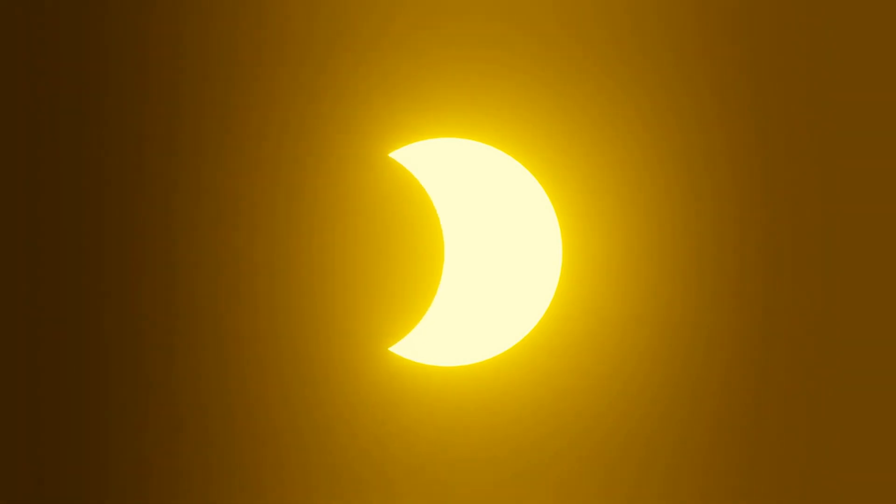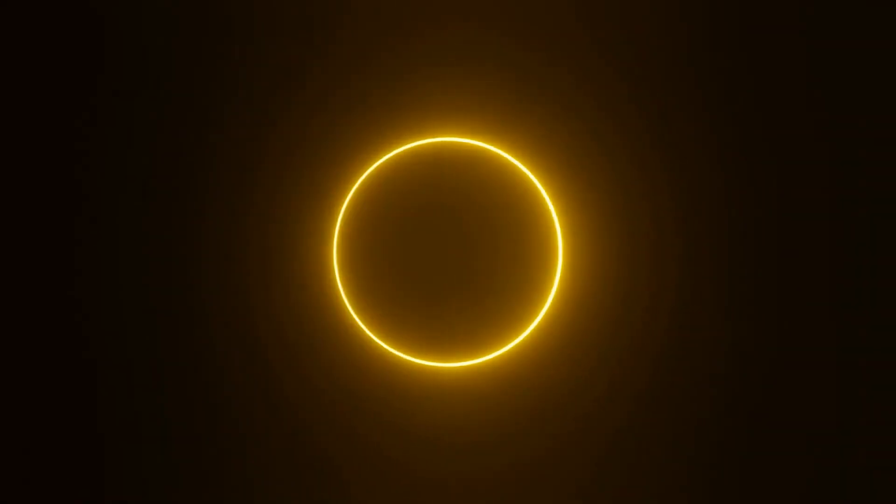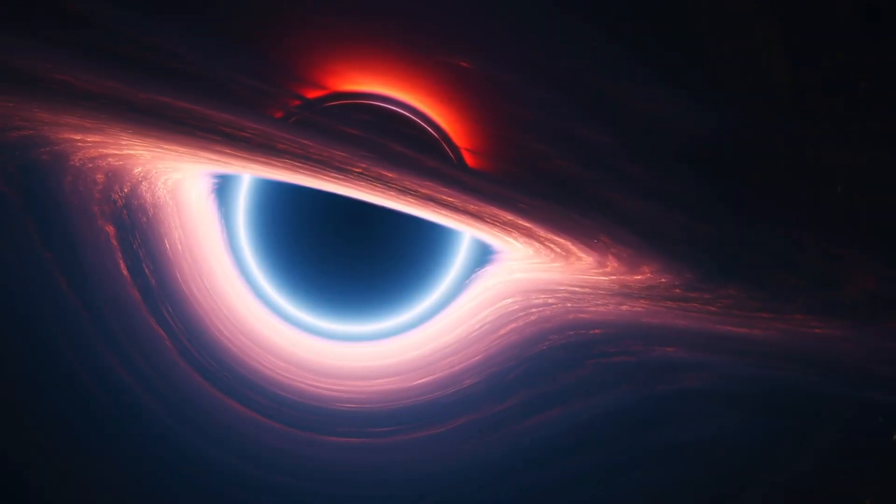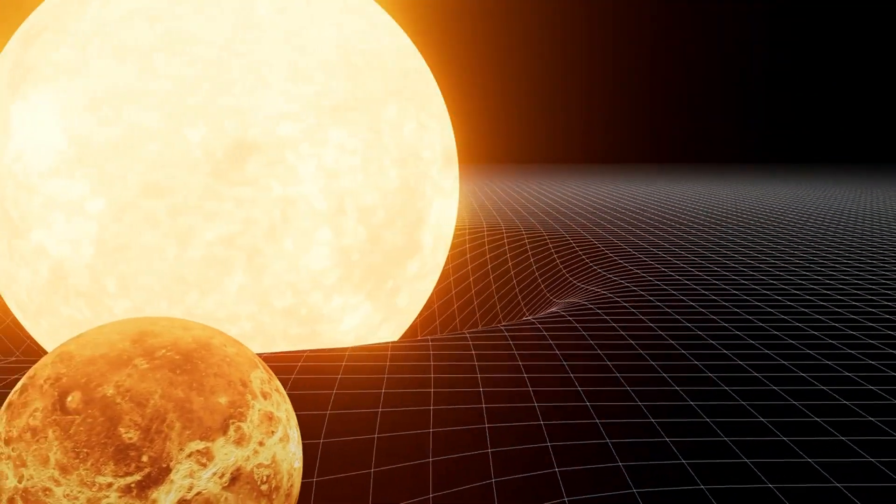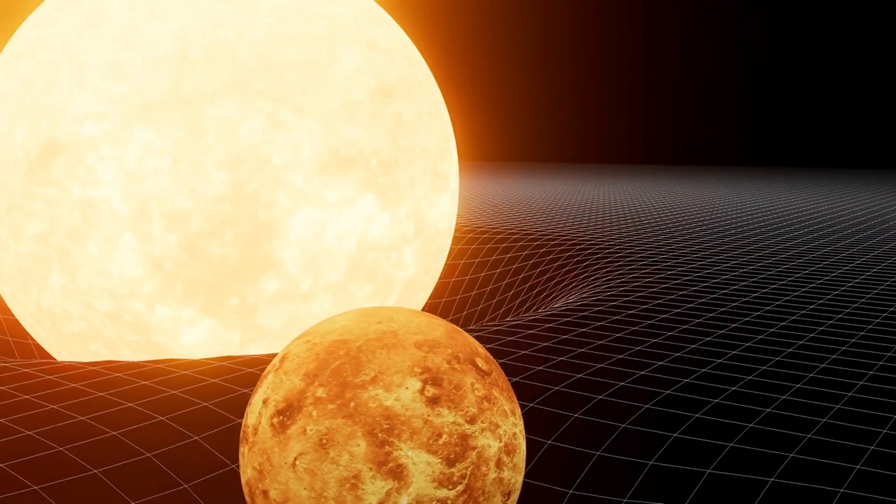This means that for a short time, the moon will completely block the sun, transforming daytime into a mysterious twilight. But what makes this celestial dance so extraordinary? Total eclipses occur due to an incredible cosmic coincidence. The apparent size of the moon and the sun in our sky is almost the same because of a unique alignment.